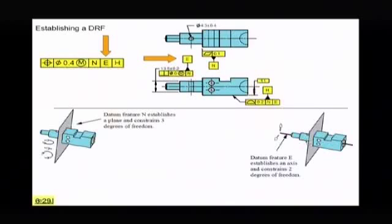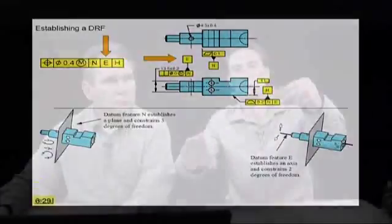What's the only thing left on this one? We have three on the first one and two on the second one. There's only one degree of freedom left. What is this part still allowed to do? Well, this part is still allowed to rotate. So that's the only thing that this tertiary datum can do is it has to stop the rotation.